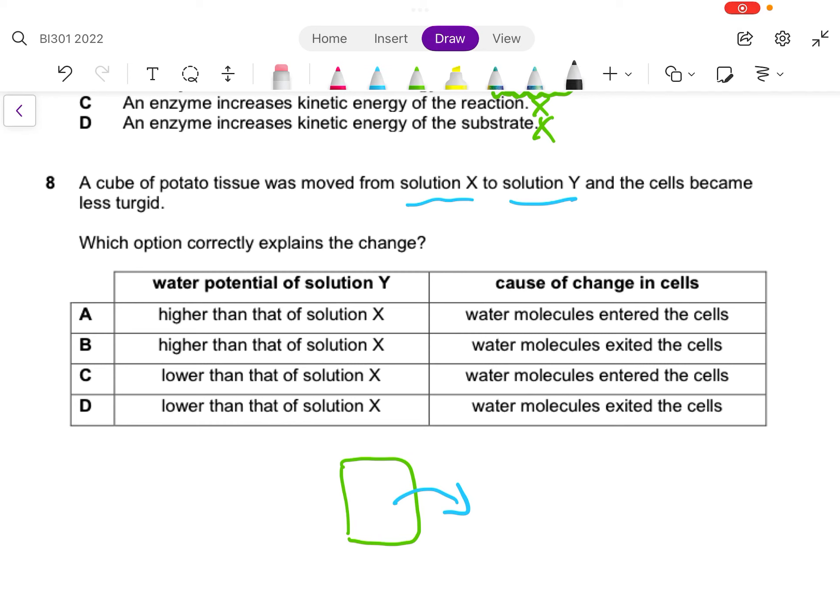So this plant cell is now in solution Y and water has left the potato tissue. When we say it's less turgid, means there's less water inside. Which option correctly explains the change? Let's look at this column over here. Water will have exited the cell, so you can rule out A and C as the answer already. So we're left with B and D.